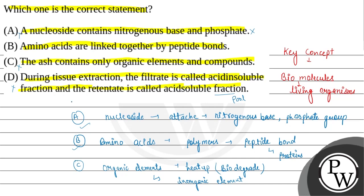Statement A, C, और D यहाँ पर गलत हैं। Statement B — amino acids are linked together by peptide bond — यह सही होता है। तो इस question का सही option है option B। I hope you understood this question, thank you.